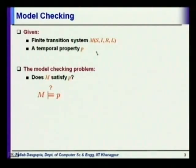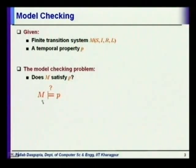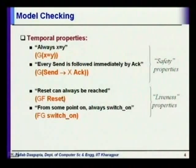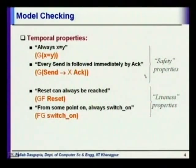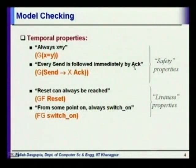Just to get into the terminology once again: given a finite state transition system M having states S, inputs I, transition relation R, and labelling function L, and the temporal property P, the model checking problem is to check whether M models P. We have broadly two types of properties: safety properties and liveness properties. Safety properties say that always something is holding — for example, always x is y, or every send is followed immediately by ack. Liveness properties are something which must happen in the future.